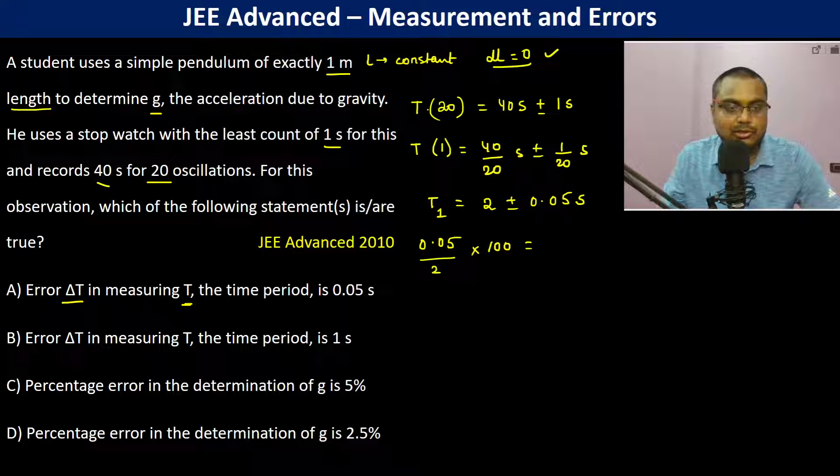Percentage... but here, this is about ΔT only. ΔT is 0.05 seconds only. We are not calculating percentage, so A is correct.